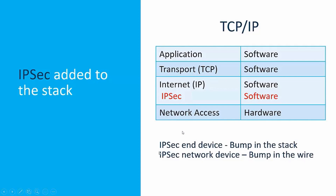When we use IPsec and have it added to the stack in an end device, it's called a bump in the stack. When IPsec is added to a network device, like a router, it's called a bump in the wire.